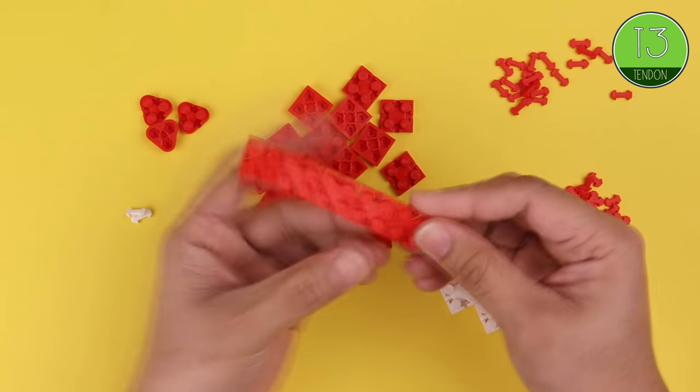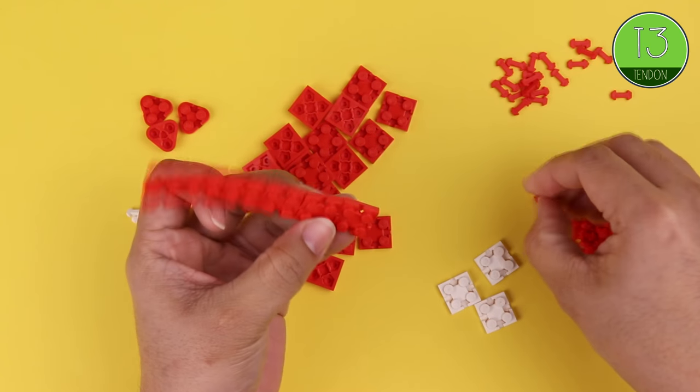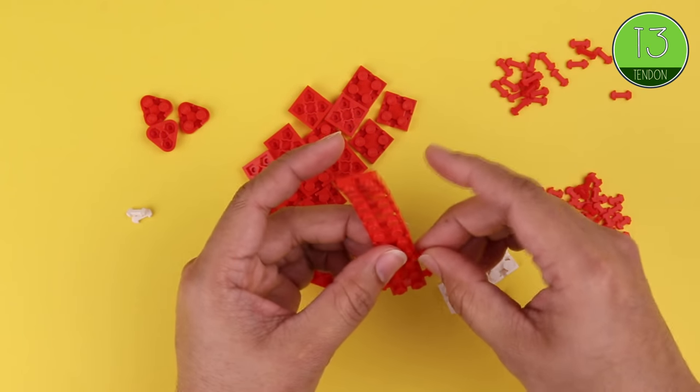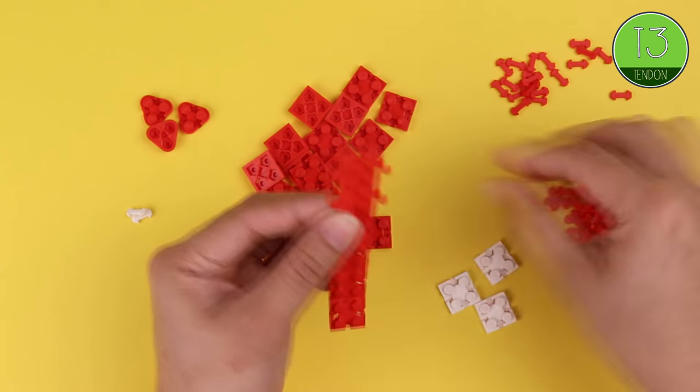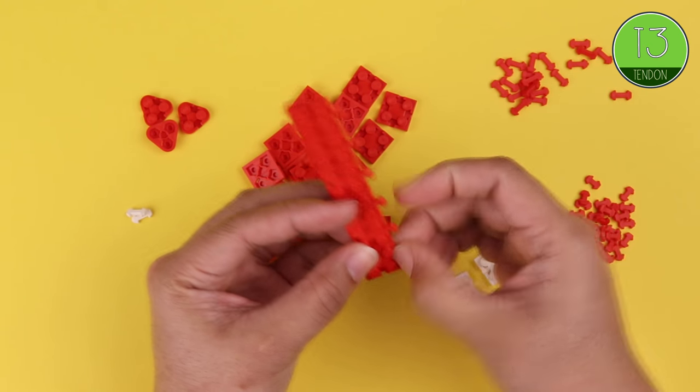If at any point during the build you get confused about which tendon length we're using, just take a look in the top right hand corner of the screen. The token there will let you know.